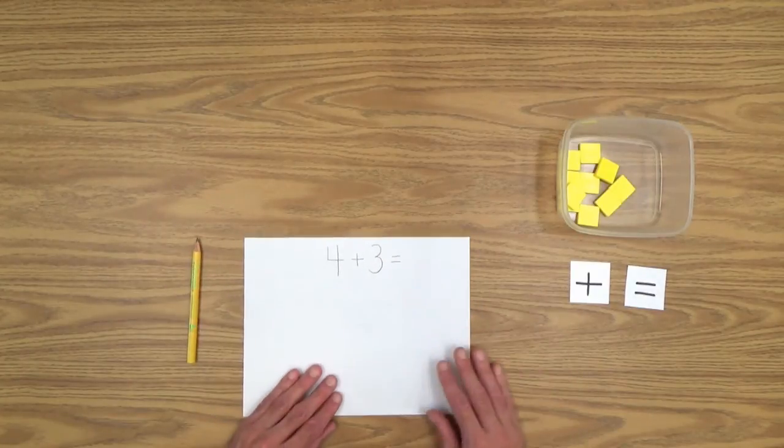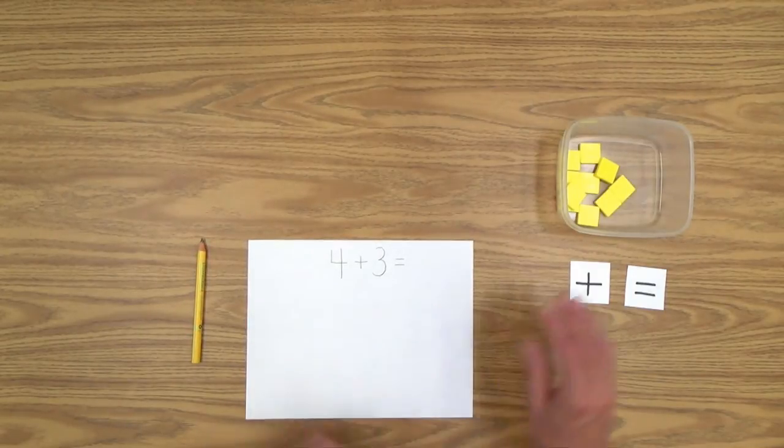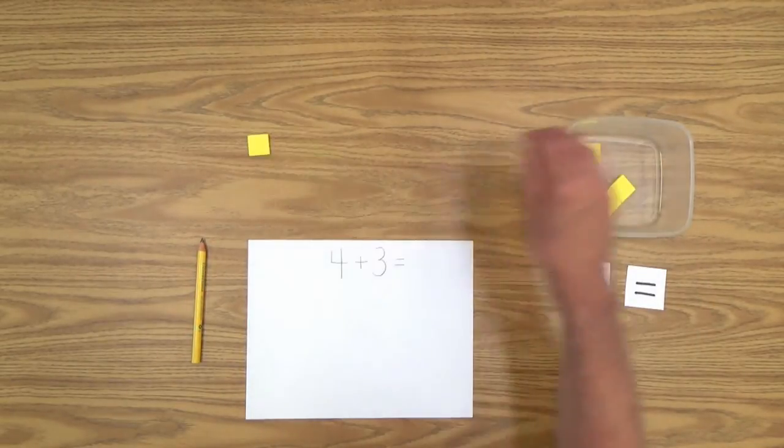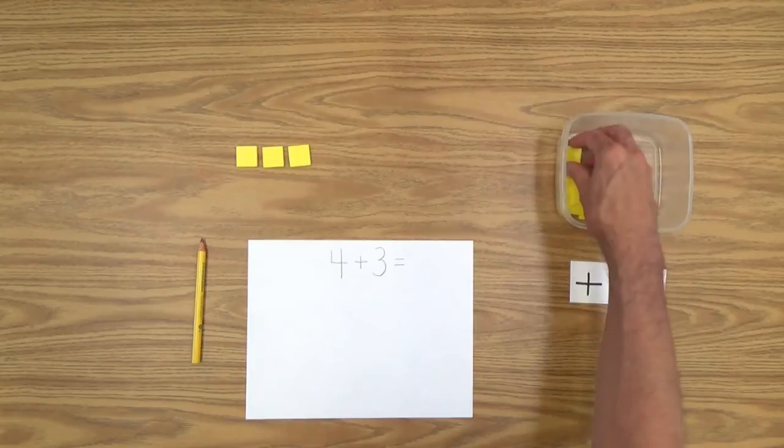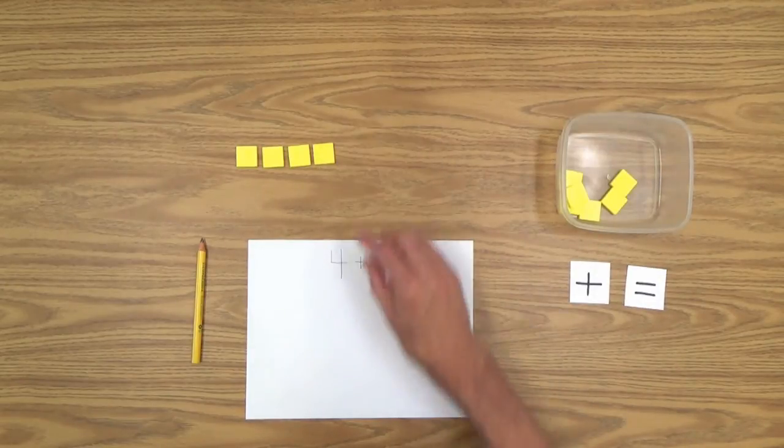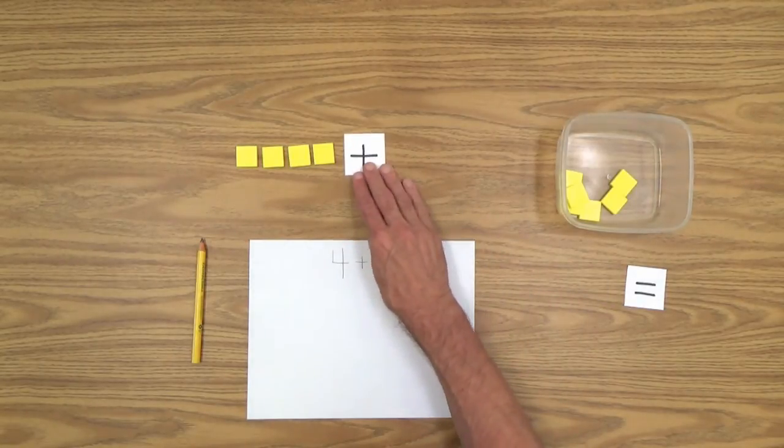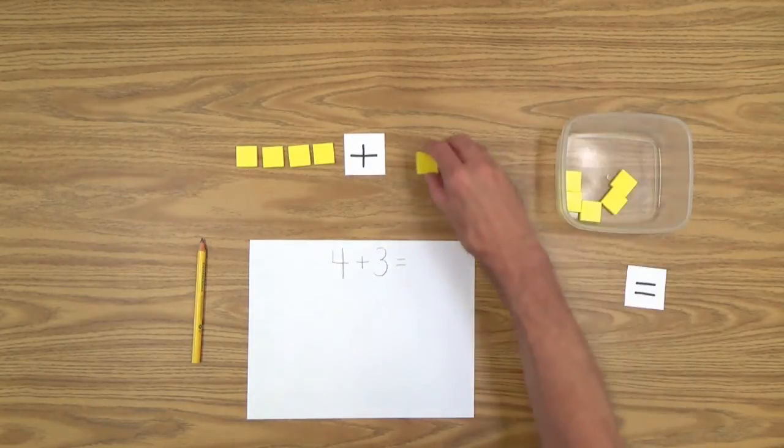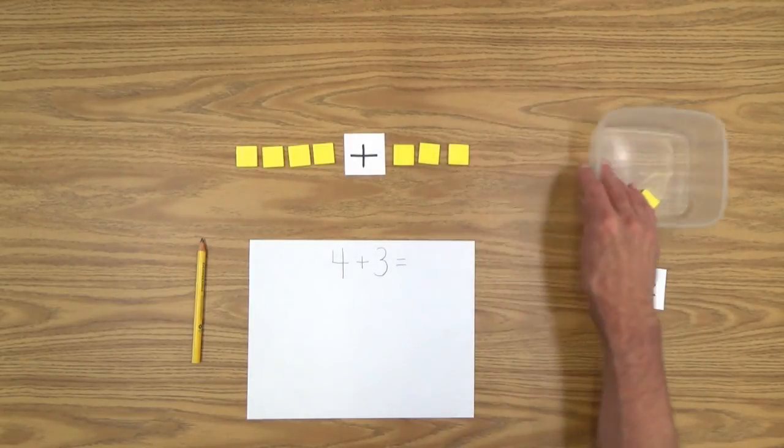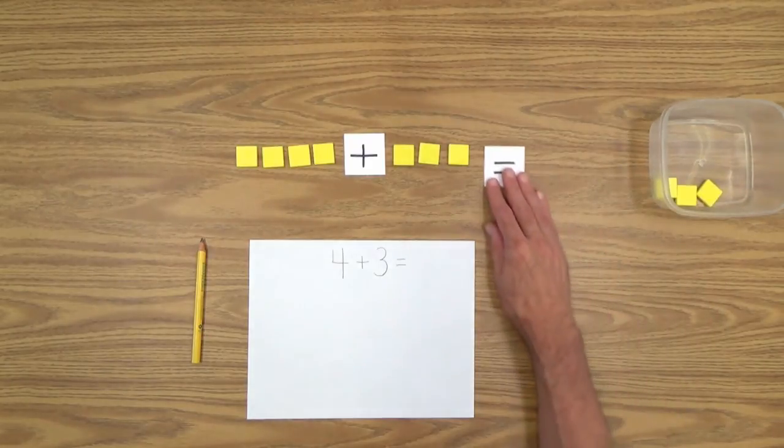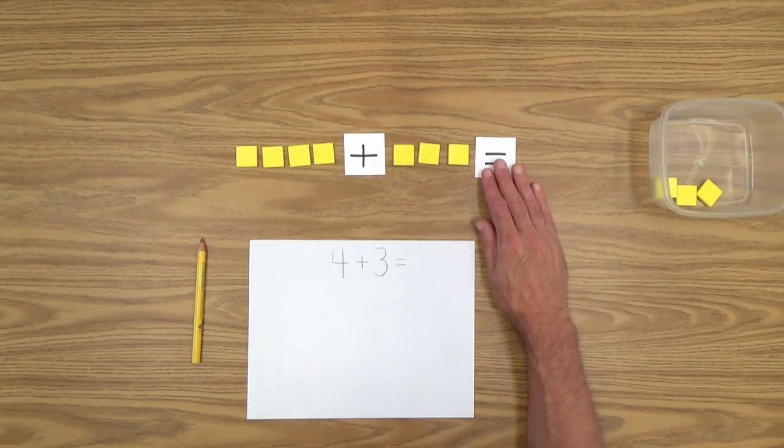So, here's how we're going to do this, using the counters. So, we're going to do what the problem tells us to do. We need four counters, two, three, four, and then it says, and we need to add three more. So, there's our plus sign. And, then we need to add one, two, three more.